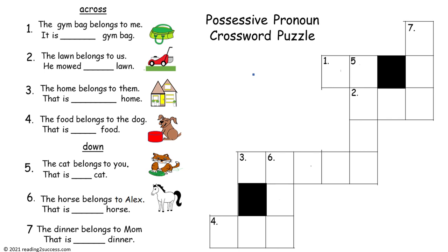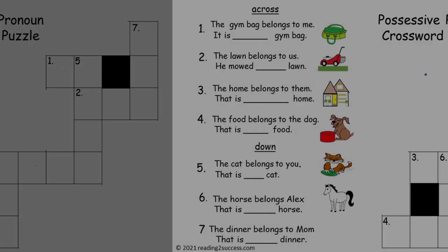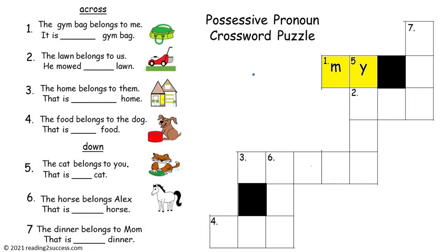We're going to have kids complete the possessive pronoun crossword puzzle, working first on pronouns across, then down. Read each clue: One across — the gym bag belongs to me. It is __ gym bag. The answer is 'my.' It is my gym bag. The second clue: the lawn belongs to us. He mowed __ lawn. The answer is 'our.' He mowed our lawn.